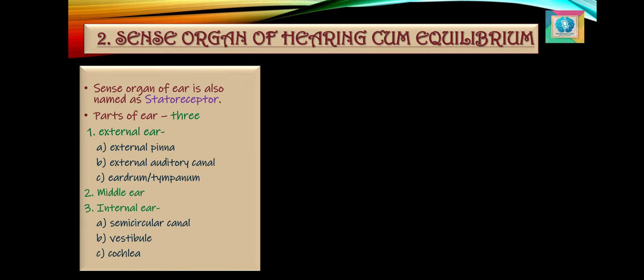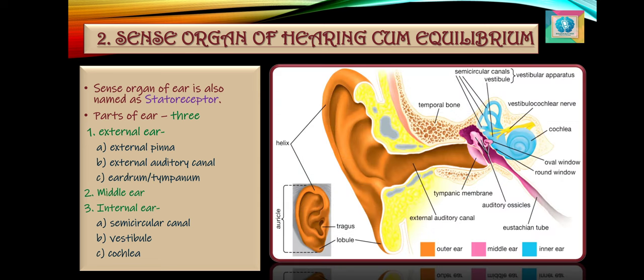The next sense organ is the sense organ of hearing cum equilibrium, also termed as phonoreceptor cum statoreceptor. A pair of ears present on the lateral sides of the head — one on either side — are the organs for perceiving sound waves, and they convey sound waves to the brain. They help in analyzing the pitch, quality, intensity and direction of sound waves, and also in maintaining balance and body equilibrium.